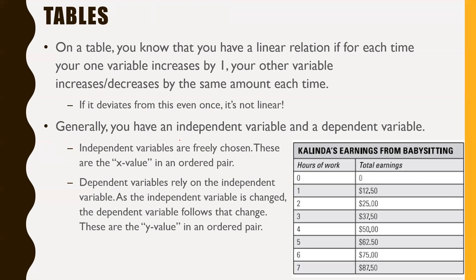Generally speaking, you're going to have an independent variable and a dependent variable. An independent variable is a variable that is freely chosen — you can control what's going on with it, you can increase or decrease it. Independent variables are generally the x value in an ordered pair, or your x value in your table — along the x-axis on a graph.